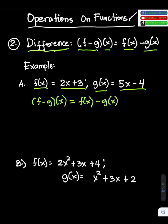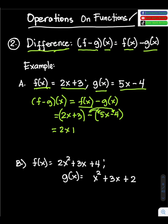Substitute the value of f of x into the formula. So f of x is 2x plus 3, subtract the value of g of x which is 5x minus 4. Then distribute the negative sign to the value of g of x. So we have 2x plus 3; negative times 5x equals negative 5x; negative times negative 4 is positive 4.